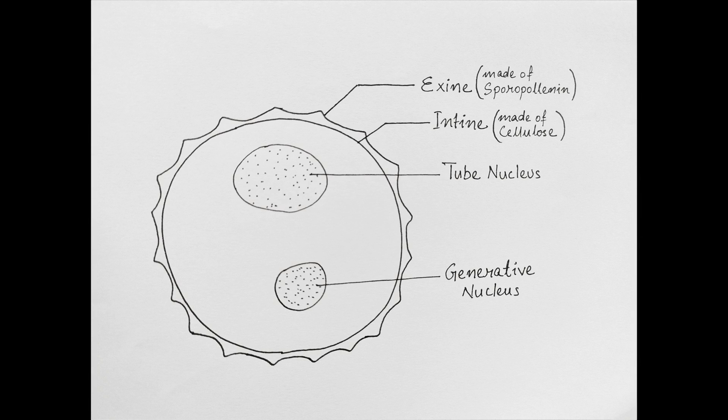The inner wall of the pollen grain is made of thin delicate cellulose material called endospore or intine. The outer wall, however, is tough, cuticularized, and made of a chemically resistant biopolymer called sporopollenin. This layer is known as exospore or exine and in many species is richly ornamented.